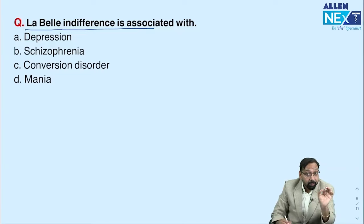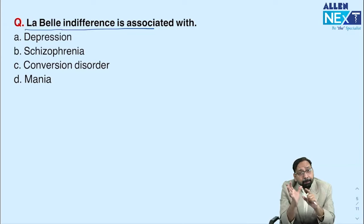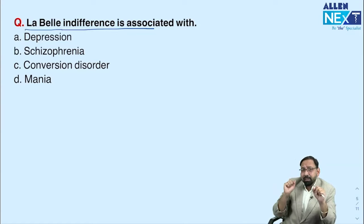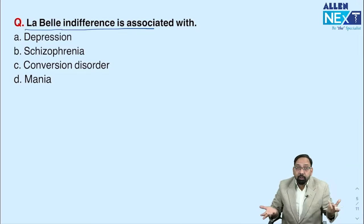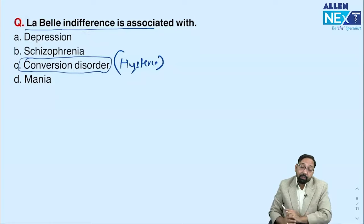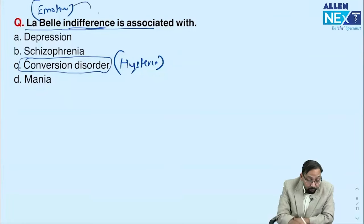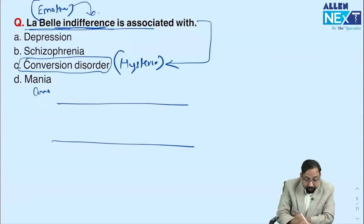Third topic: La Belle Indifférence — a repeat from the 2023 NEET exam. The question described a girl who, after trauma, developed blindness with emotions not matching her loss. Normally, a girl who can't see would be extremely distressed, but patients with conversion disorder come calmly saying 'Doctor, I can't see.' This emotional indifference is called La Belle Indifférence and is seen in conversion disorder, previously known as hysteria.